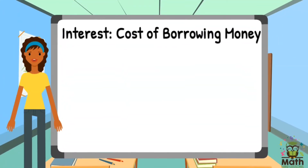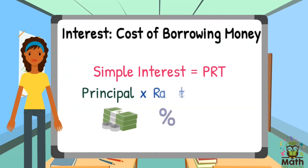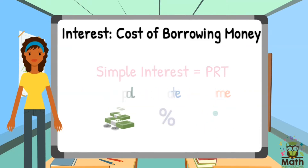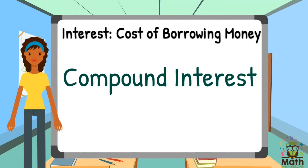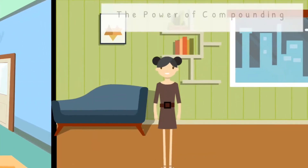You can calculate simple interest using P×R×T — the principal (amount you borrow), times the interest rate, times how long it takes to pay back the loan. But there's another kind of interest: compound interest. So how is compound interest different from simple interest?